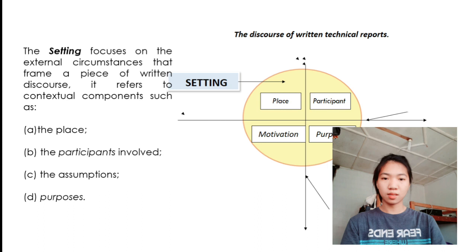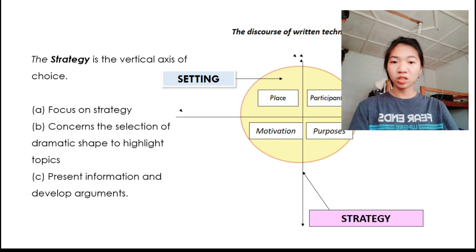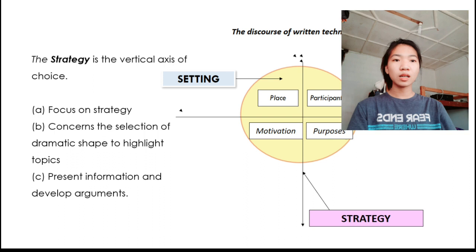Let's move to the next axis, which is the strategy. It is the vertical axis of choice. With its focus on strategy, it foregrounds the tactical nature of written technical reports, since it concerns the selection of an appropriate organizing principle or dramatic shape to highlight topics, present information, and develop arguments.